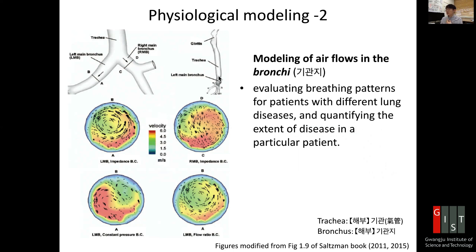Modeling airflow in the bronchi can be important for patients with lung diseases. Evaluating breathing patterns and quantifying the extent of disease in a particular patient may be important. Here we use physiology and engineering approaches to model this and solve a fluid mechanics problem. You can see velocity maps as vector maps, with speed color-coded at different times, and computed impedance and pressure boundary conditions.